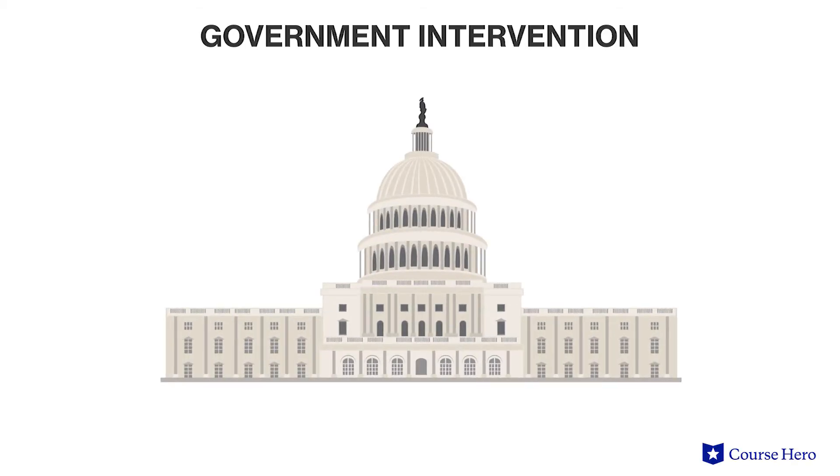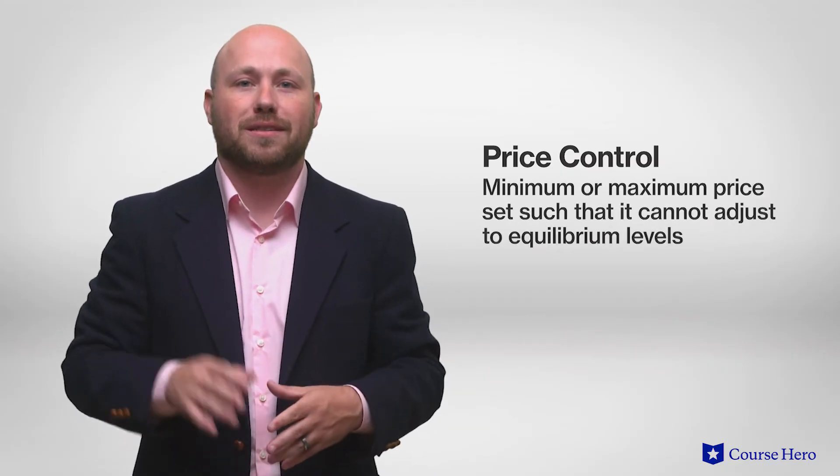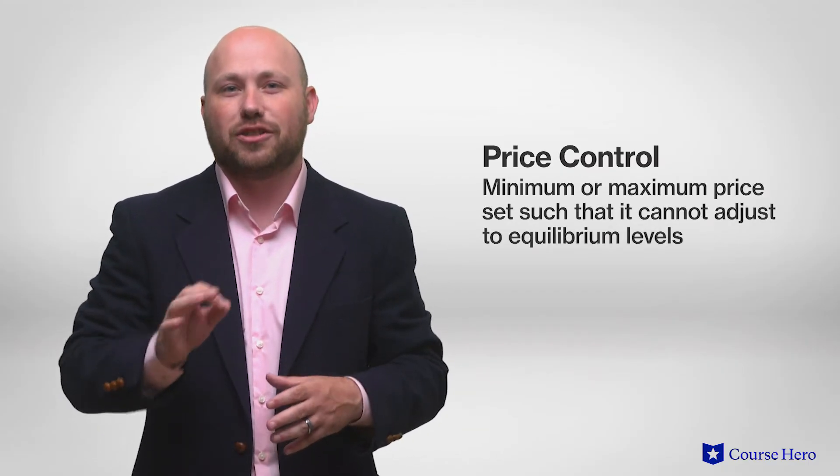If the government feels that the market price isn't fair to either buyers or sellers, they may implement a price control. In economics terms, a price control is a minimum or maximum price set such that it cannot adjust to equilibrium levels. Price controls are regulations imposed by the government that are aimed at protecting consumers and sellers, and they include establishing a price floor or a price ceiling. These interventions happen for policy and social reasons, not to address market failures.